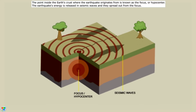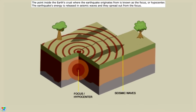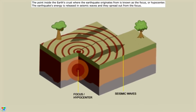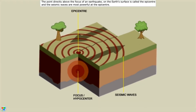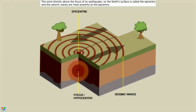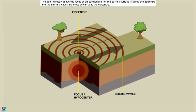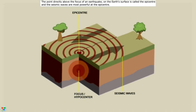The earthquake's energy is released in seismic waves, and they spread out from the focus. The point directly above the focus of an earthquake on the earth's surface is called the epicenter, and the seismic waves are most powerful at the epicenter.